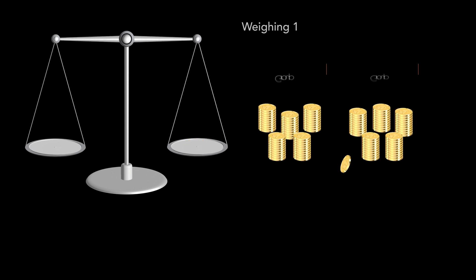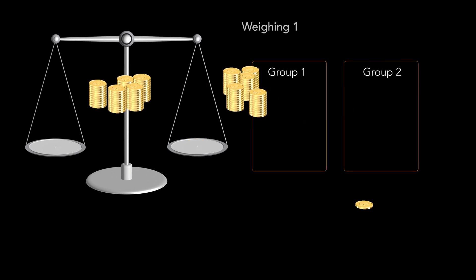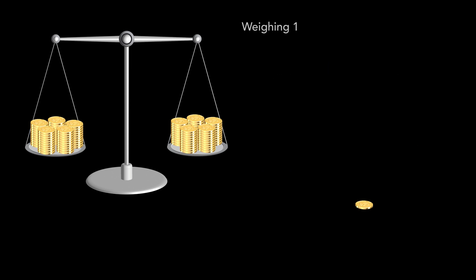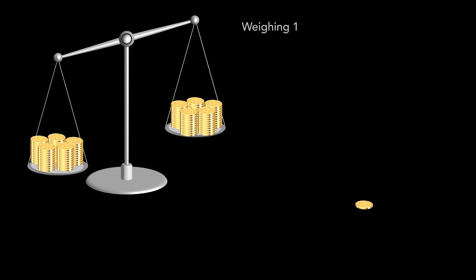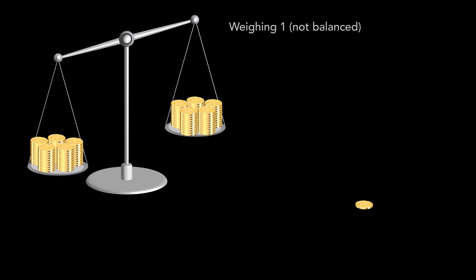We compare the weight of the two groups of 50 coins. If one of the arms of the scale moves down, it means that the counterfeit coin is in one of the groups on the scale, but we don't know in which group exactly.